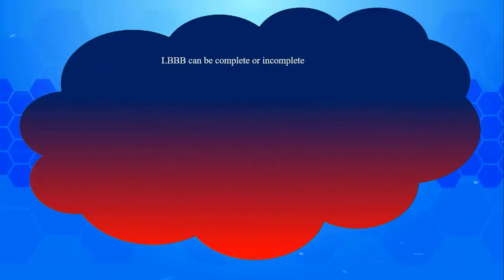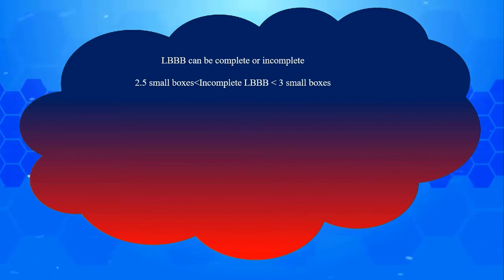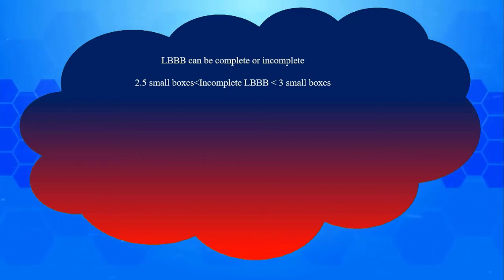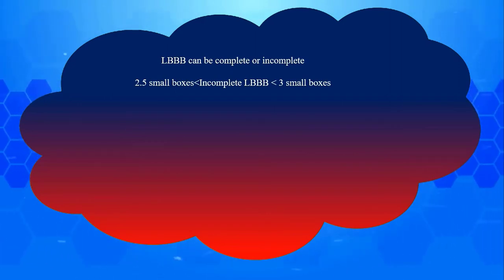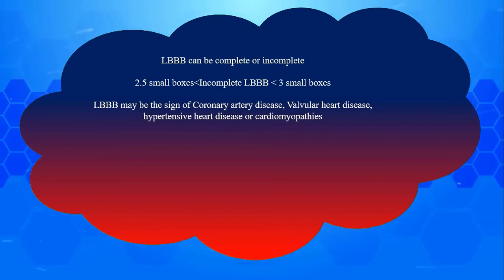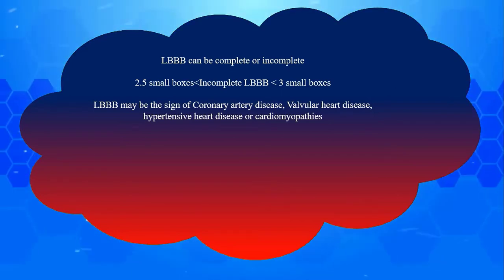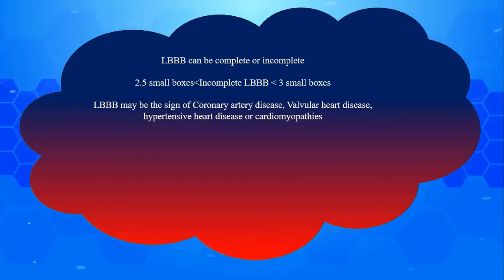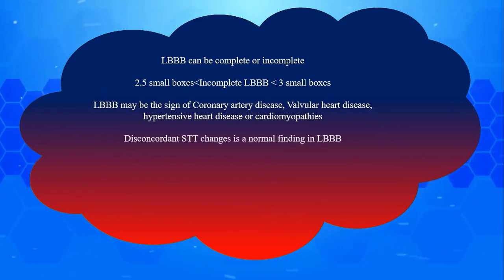LBBB can be complete or incomplete. The only difference is QRS duration — greater than three small squares is considered complete LBBB, while QRS complexes between 2.5 to 3 small boxes is considered incomplete LBBB. Unlike RBBB, LBBB is usually a marker of organic heart disease. Therefore LBBB may be the first clue to four undiagnosed but extremely important conditions: 1) advanced coronary artery disease, 2) valvular heart disease, 3) hypertensive heart disease, 4) cardiomyopathies. Never underestimate LBBB even if the patient looks healthy. Discordant STT wave changes are a normal finding in LBBB.